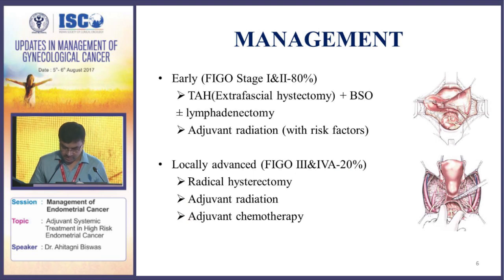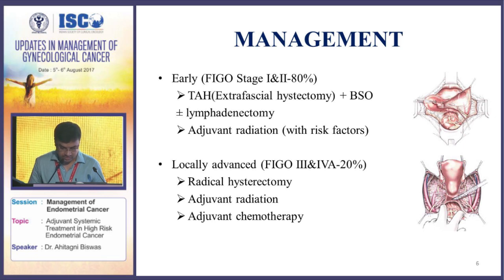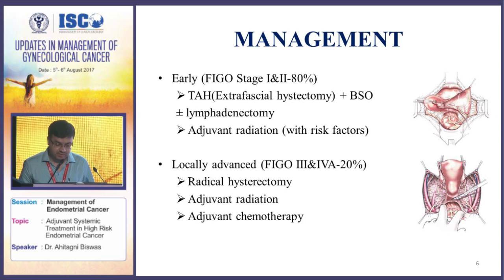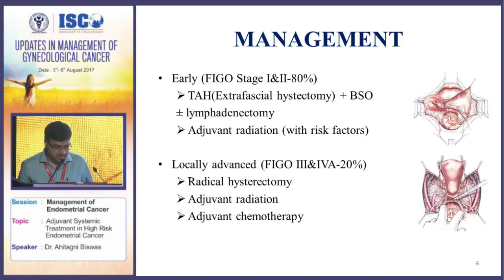A brief outline of the management of endometrial cancer: early endometrial cancer, stage 1 and stage 2, fortunately constitutes 80 percent of all patients we see. Surgery is the cornerstone of management in the form of total abdominal hysterectomy and bilateral salpingo-oophorectomy, with or without lymphadenectomy — that is slightly debatable. Adjuvant radiation therapy should be offered in selected patients with high-risk factors. Locally advanced, that is stage 3 and stage 4A endometrial cancer, constitutes 15 to 20 percent of all patients, and treatment should be in the form of radical hysterectomy with adjuvant chemotherapy and radiotherapy.